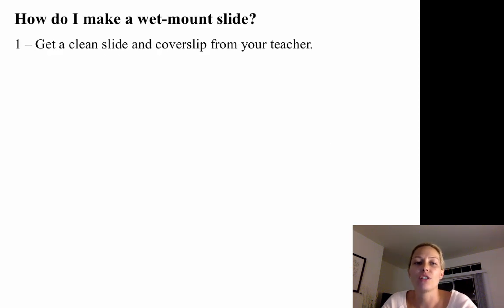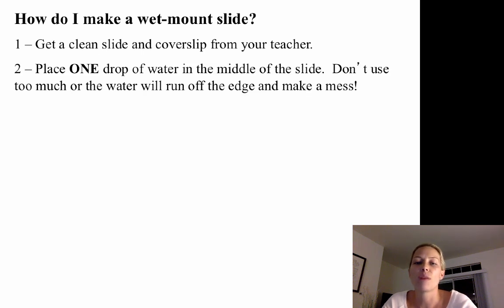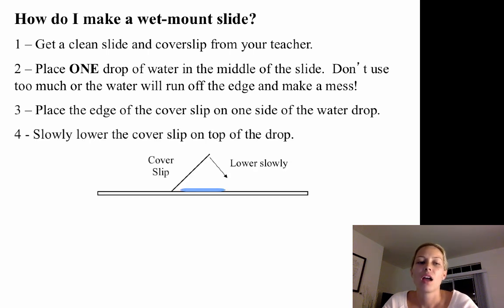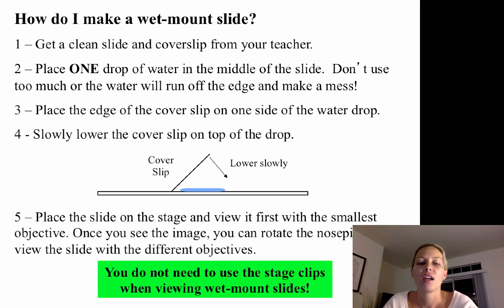How do you make a wet mount slide? First, get a clean slide and cover slip. Place one drop of water in the middle of the slide — don't use too much or it will run off the edge. Place the edge of the cover slip on one side of the drop of water, then slowly lower the cover slip on top. Place the slide on the stage and view it first with the smallest objective. Once you see an image, rotate the nosepiece to view under different objectives. There's no need to use stage clips when viewing a wet mount slide.